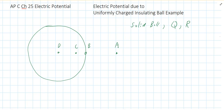We're going to use our methods to figure out a voltage, aka electric potential. We'll use one of the two methods developed in the last video to figure out the voltage created by a solid ball of charge. We're going to figure out the voltage at different locations: A, B, C, and D.